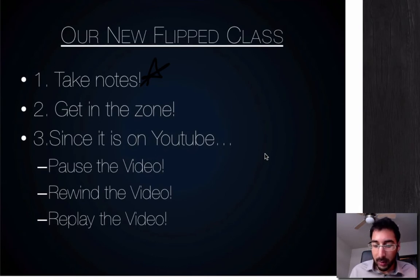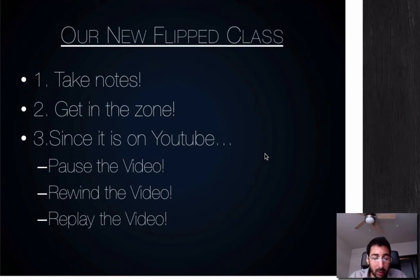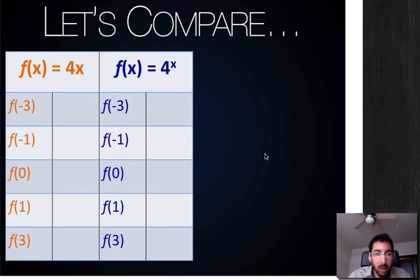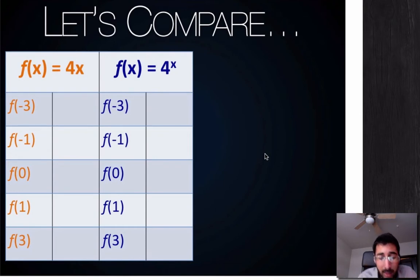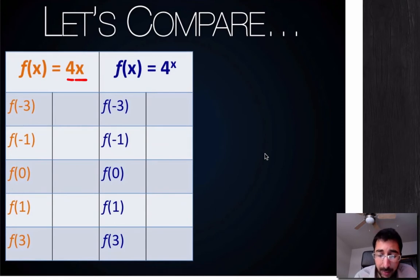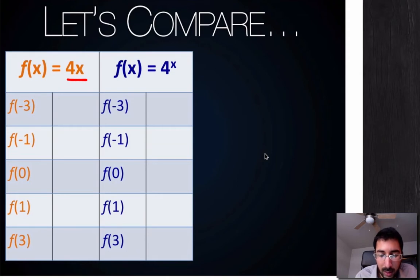So let's get started with the lesson. What I want to do is look at these two functions and compare them. Notice I have f of x equals 4x on one side, and I have f of x equals 4 to the x on the other. The thing that changes is that my variable is no longer being multiplied by a constant — it's no longer the base. Instead, in my next function, my exponent is actually a variable. So my variable has changed from being multiplied by 4 to being 4's exponent.